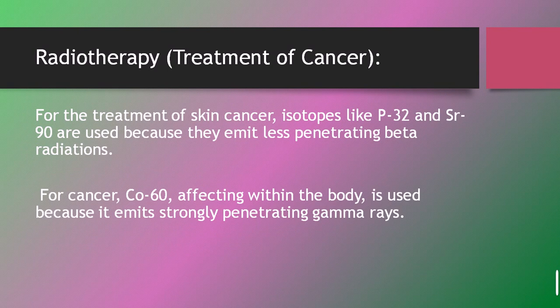Radiotherapy — the word 'radio' relates to radiations and 'therapy' means treatment. Radiotherapy uses beta and gamma radiations, which are less harmful than alpha radiations. For the treatment of skin cancer, we use phosphorus-32 and strontium-90, because they emit beta radiations that are less penetrating. They penetrate into the skin and focus on the cancerous cells to knock them out and cure the skin from cancer.